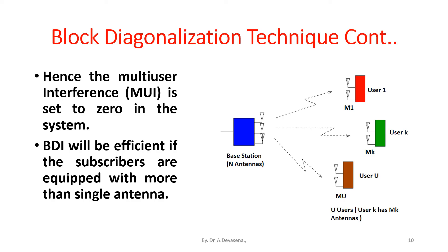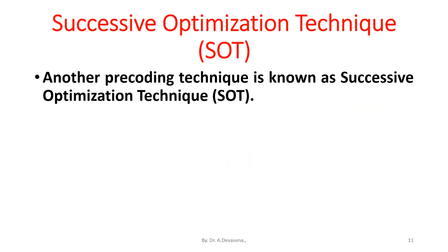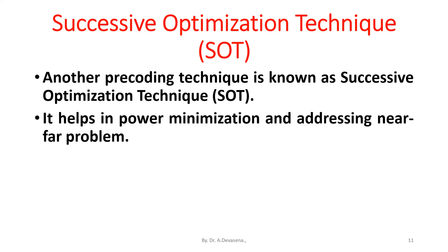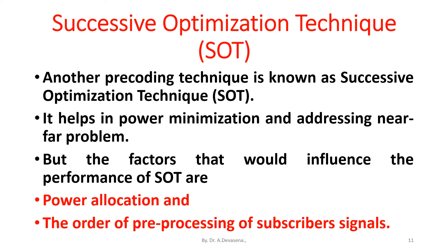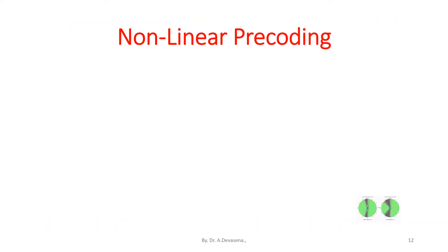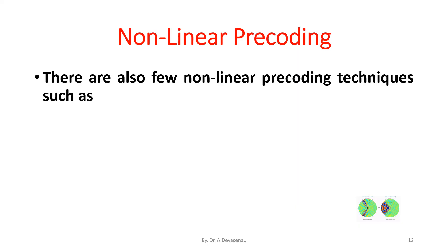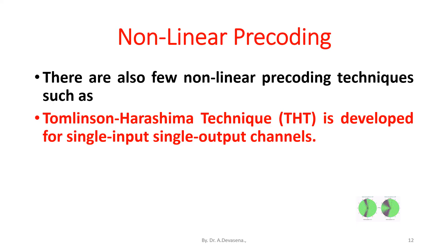Block Diagonalization will be efficient if the subscribers are equipped with more than a single antenna. Another pre-coding technique is known as Successive Optimization Technique (SOT). It helps in power minimization and addressing the near-far problem, but the factors that influence the performance of SOT are power allocation and the order of pre-processing of subscribers.